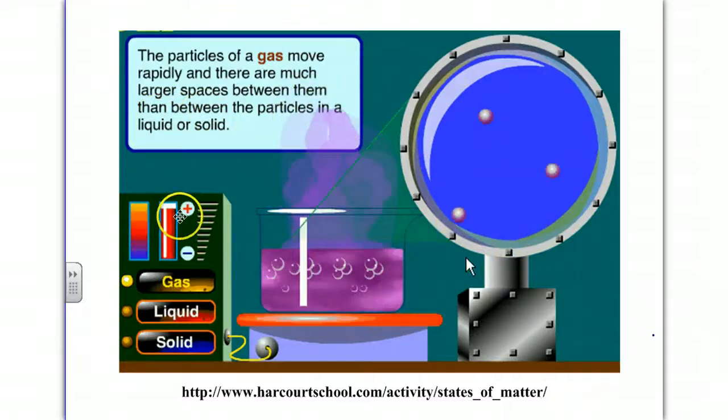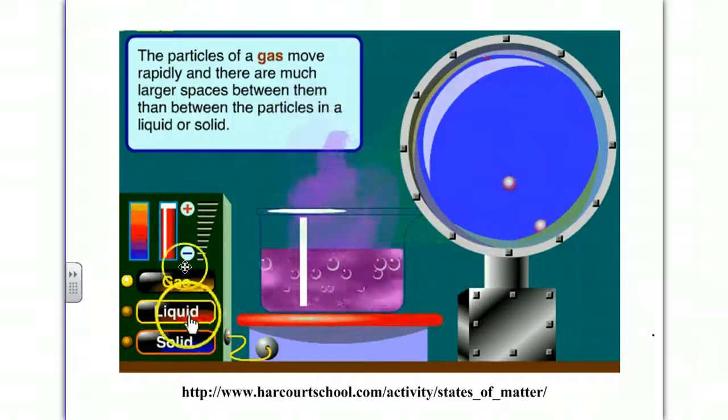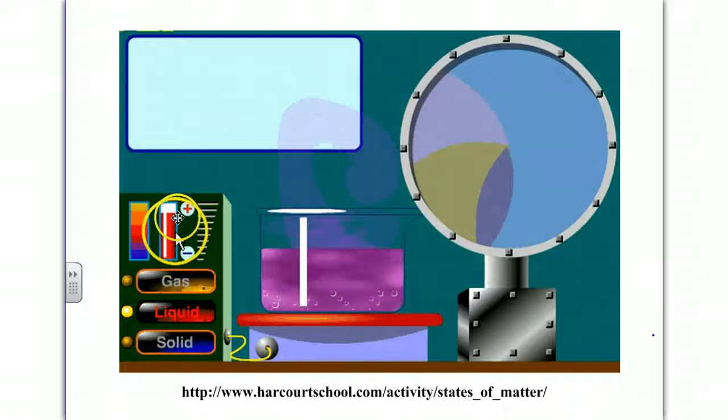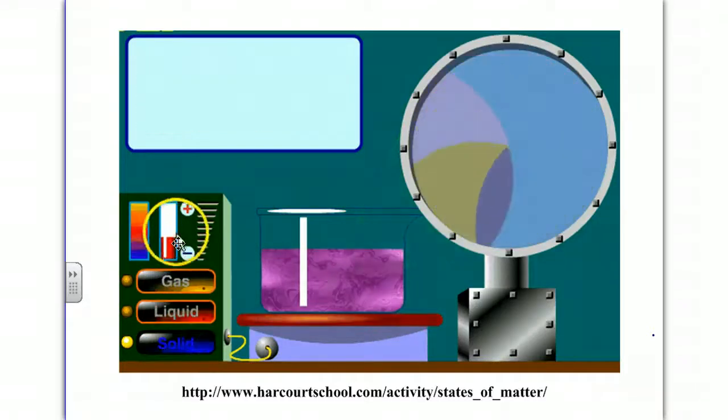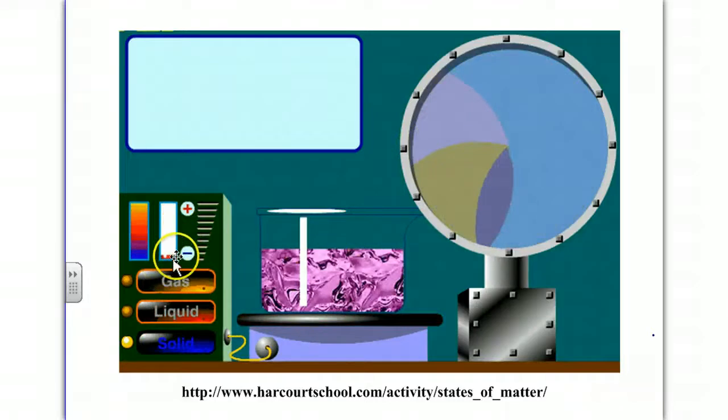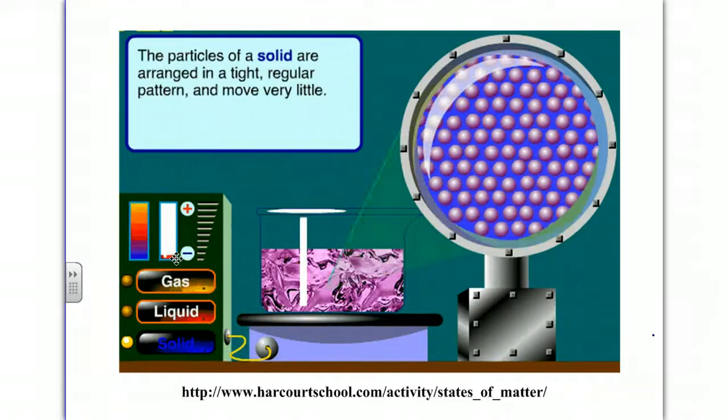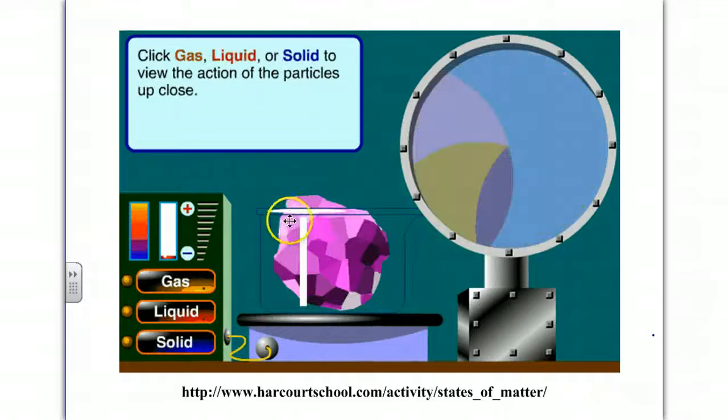If I wanted to change from a gas back to a liquid, I'd have to remove heat. When we click on the liquid button, you'll see the temperature actually drops down, removing heat. This changes it to a liquid, where the particles are now closer together. And if we hit solid, we remove heat again, and the particles become arranged in a solid pattern.